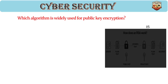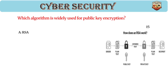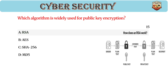Which algorithm is widely used for public key encryption? Answer: A, RSA. RSA is an asymmetric encryption algorithm that uses public and private keys and is commonly used for secure key exchange.